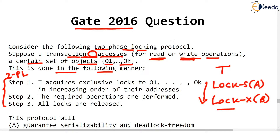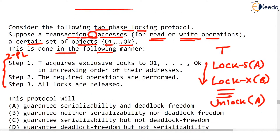Once unlocking of any of the objects has been done — like unlock A has been done — then from here on the transaction should only unlock the data items that it had locked before. This is the growing phase and this is the shrinking phase from where the unlocking starts.